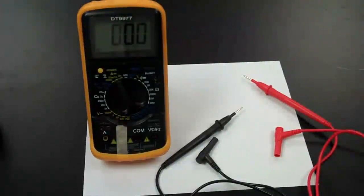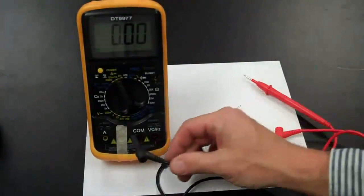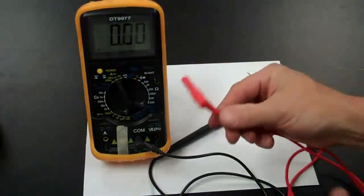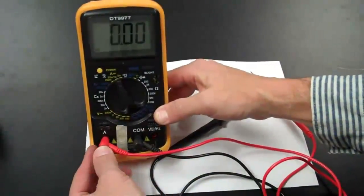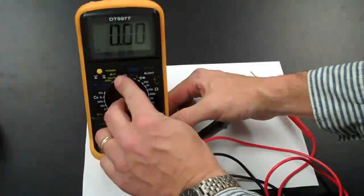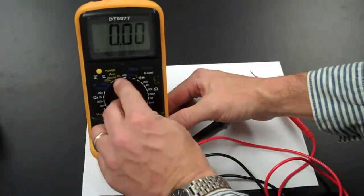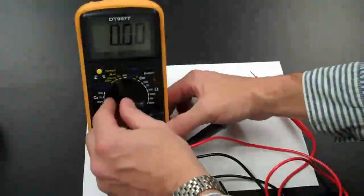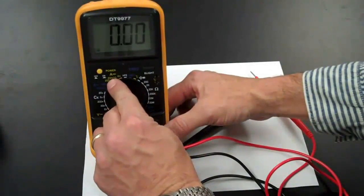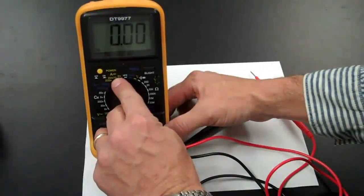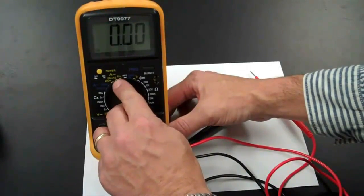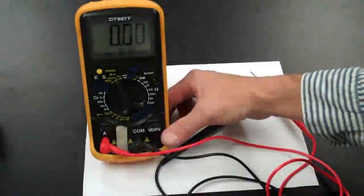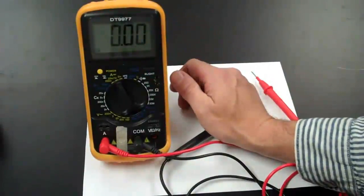Here's how we set up our meter to measure current. The black probe, as always, goes in the common plug or ground. The red plug now goes into the A for amps. I'm also going to set my dial to the yellow region of the dial that has an A with a straight line. That's for measuring DC current. I'm going to use the dial setting that says 20M slash 10. The 10 indicates that I'll be able to measure up to 10 amps. And you see that I have resolution to the tenths of amps. In other words, in increments of 10 milliamps, my display is in increments of 10 milliamps.